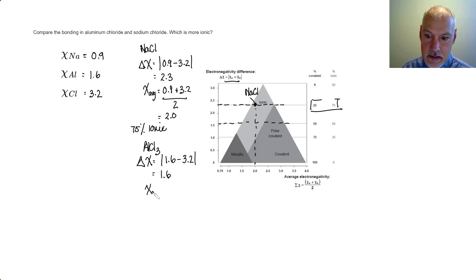And our average, 1.6 plus 3.2 divided by two, gives me about 2.4. So that then would be somewhere about here. Pretty much right at the borderline between the two regions, the ionic and the covalent region. And describing its characteristics would be there. So it's 50% ionic.